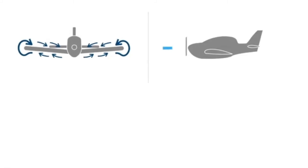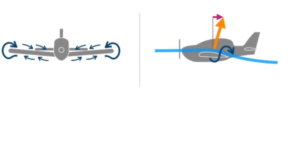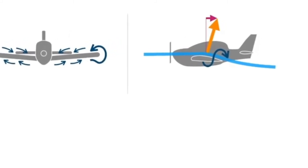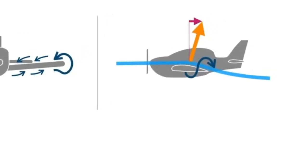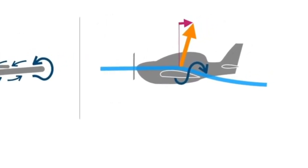The twisting vortex causes a downwards deflection of the relative airflow. Consequently, the lift vector tilts backwards and extra drag is created.